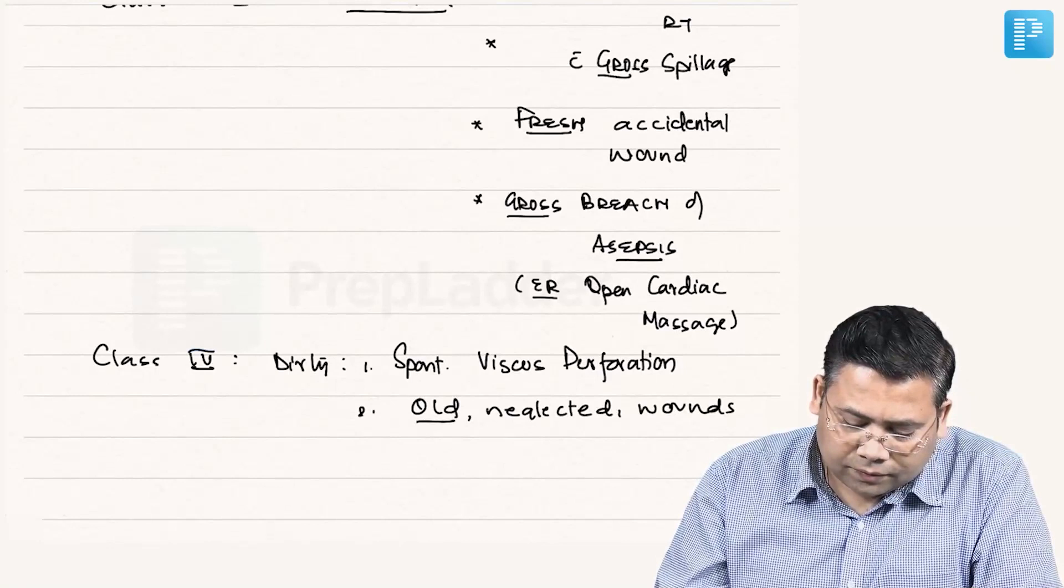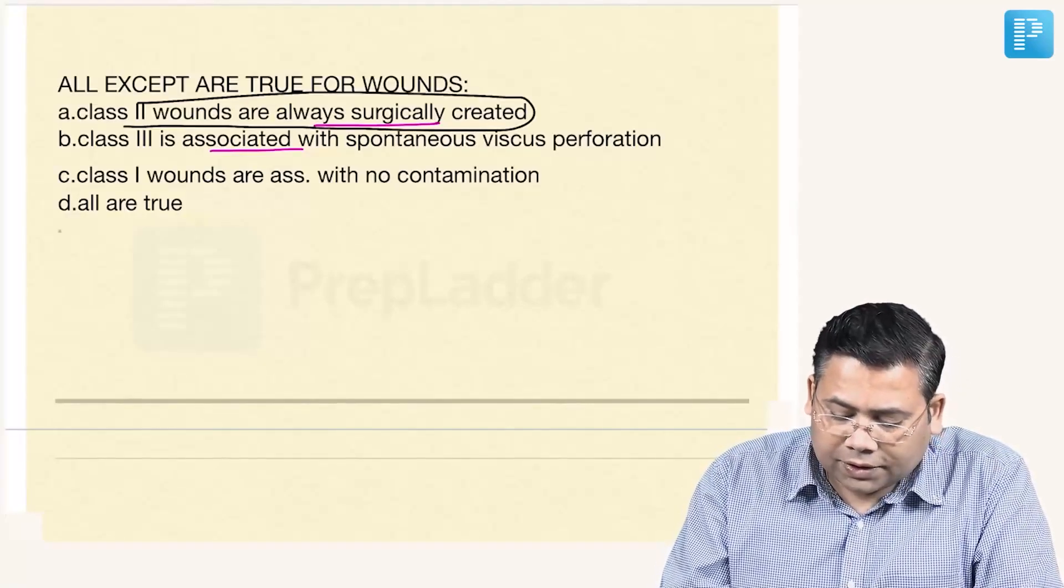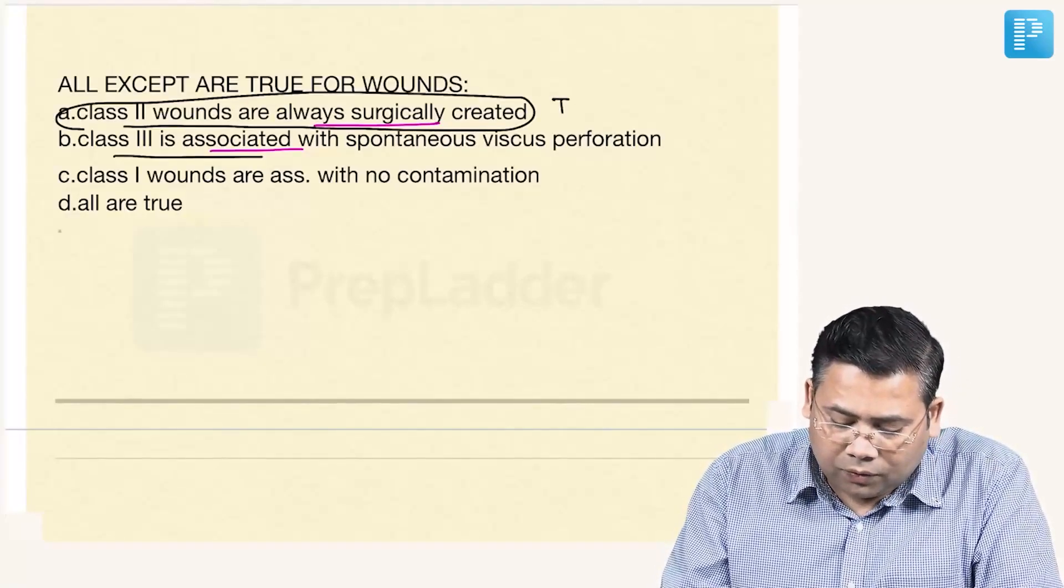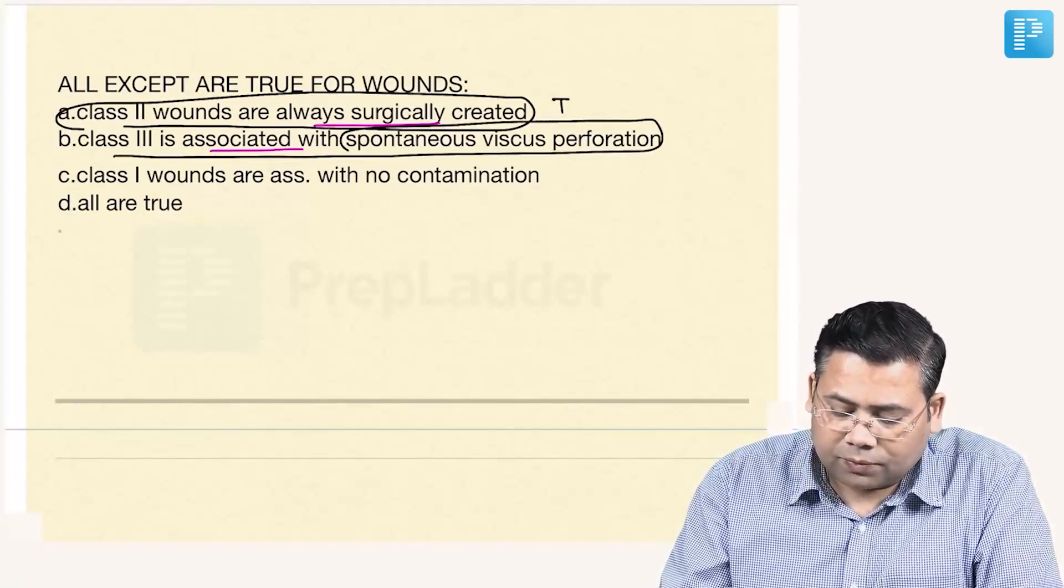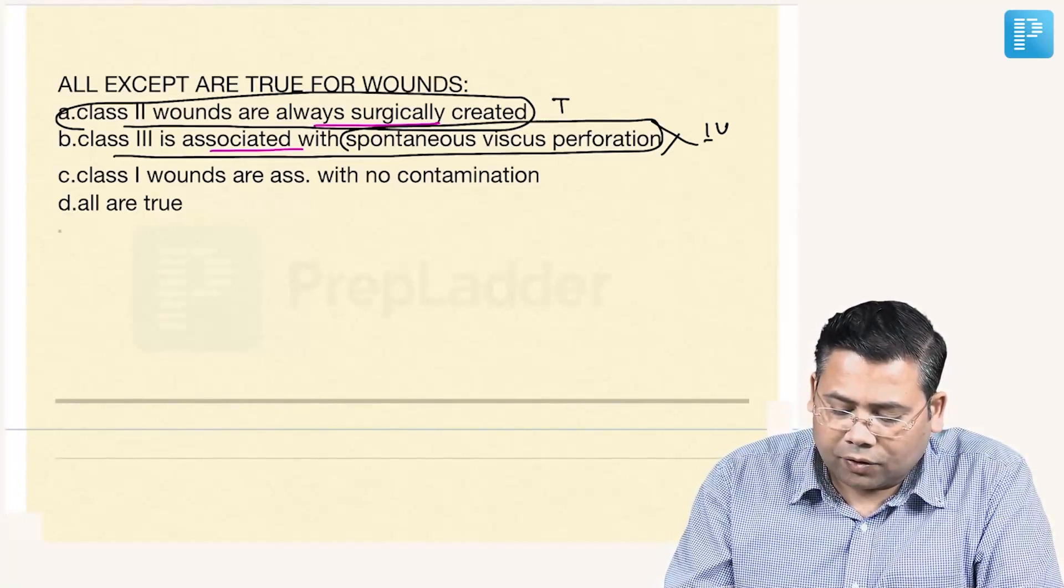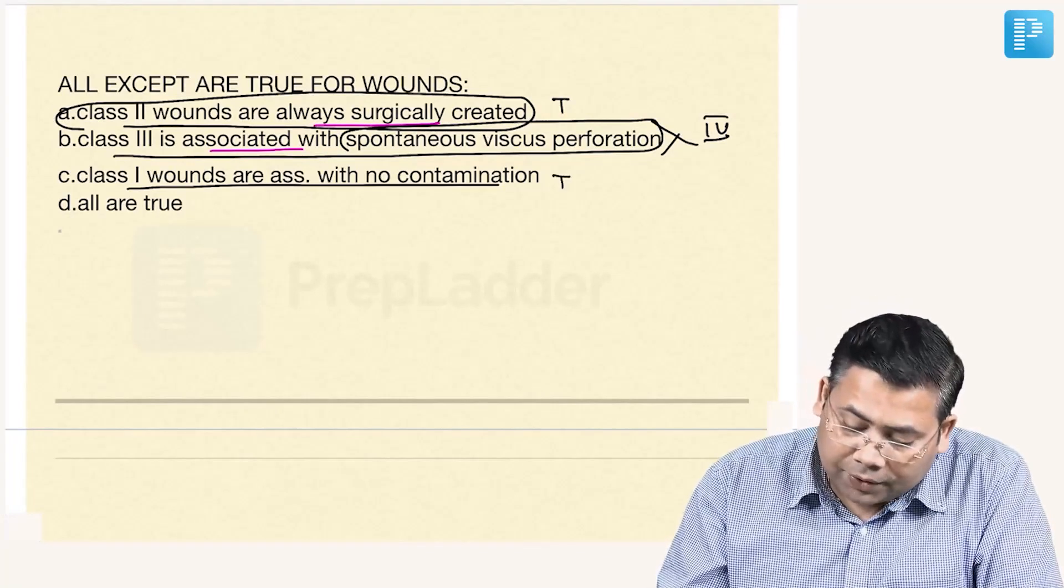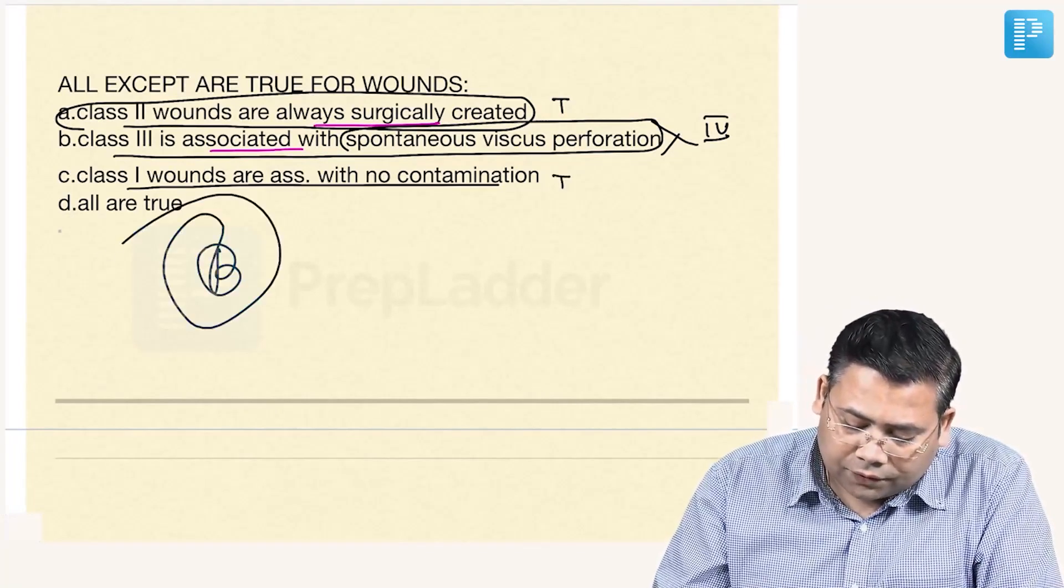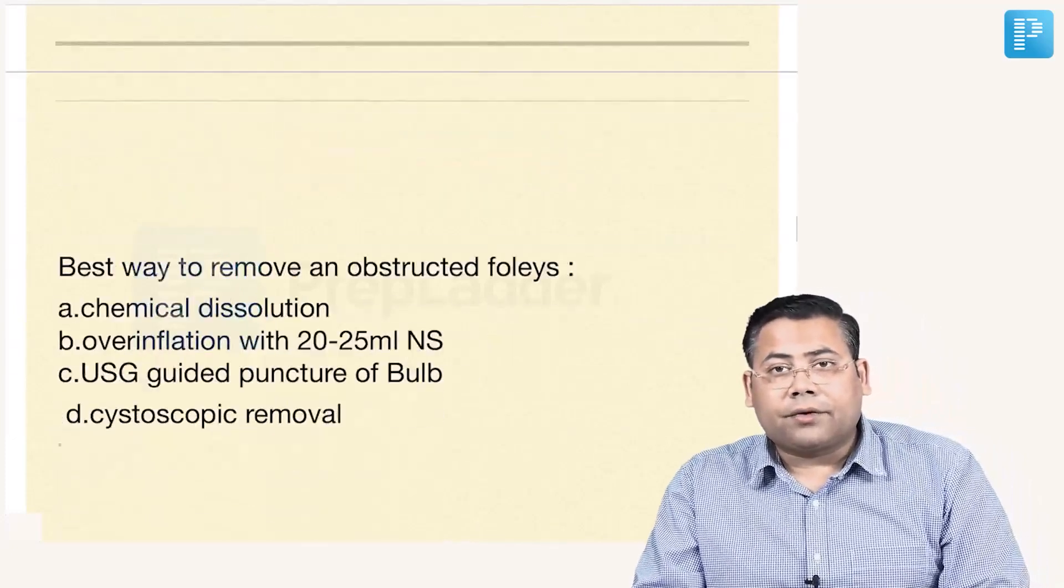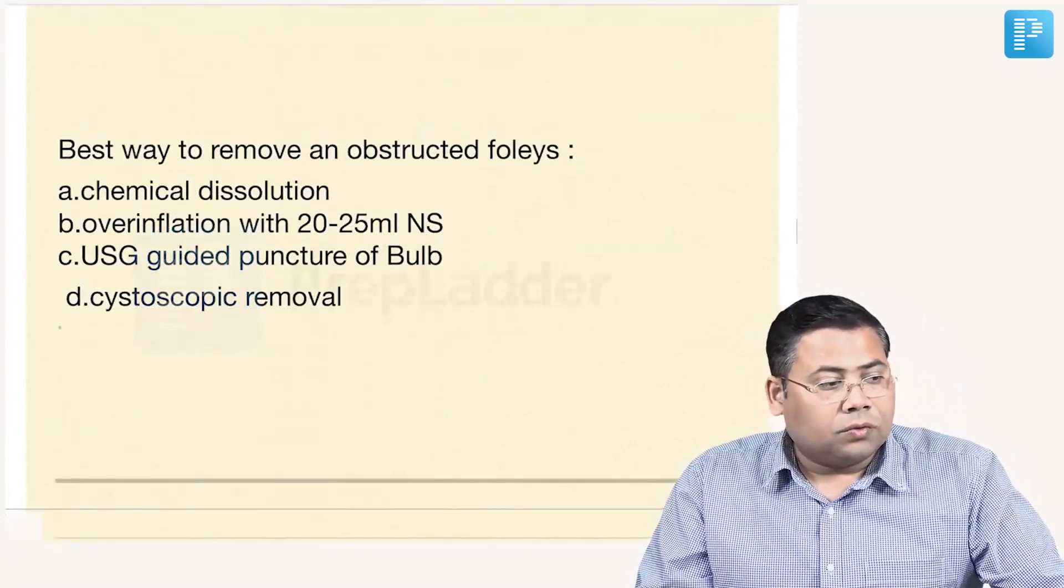Let us talk about this. Class 2 wounds are always surgically created. Absolutely true. Class 3 wounds are associated with spontaneous viscous perforation. Absolutely wrong. Because this is Class 4. Class 1 wounds are associated with no contamination. So the answer for this question is B. B is the correct response for this. Let us go to the next question.